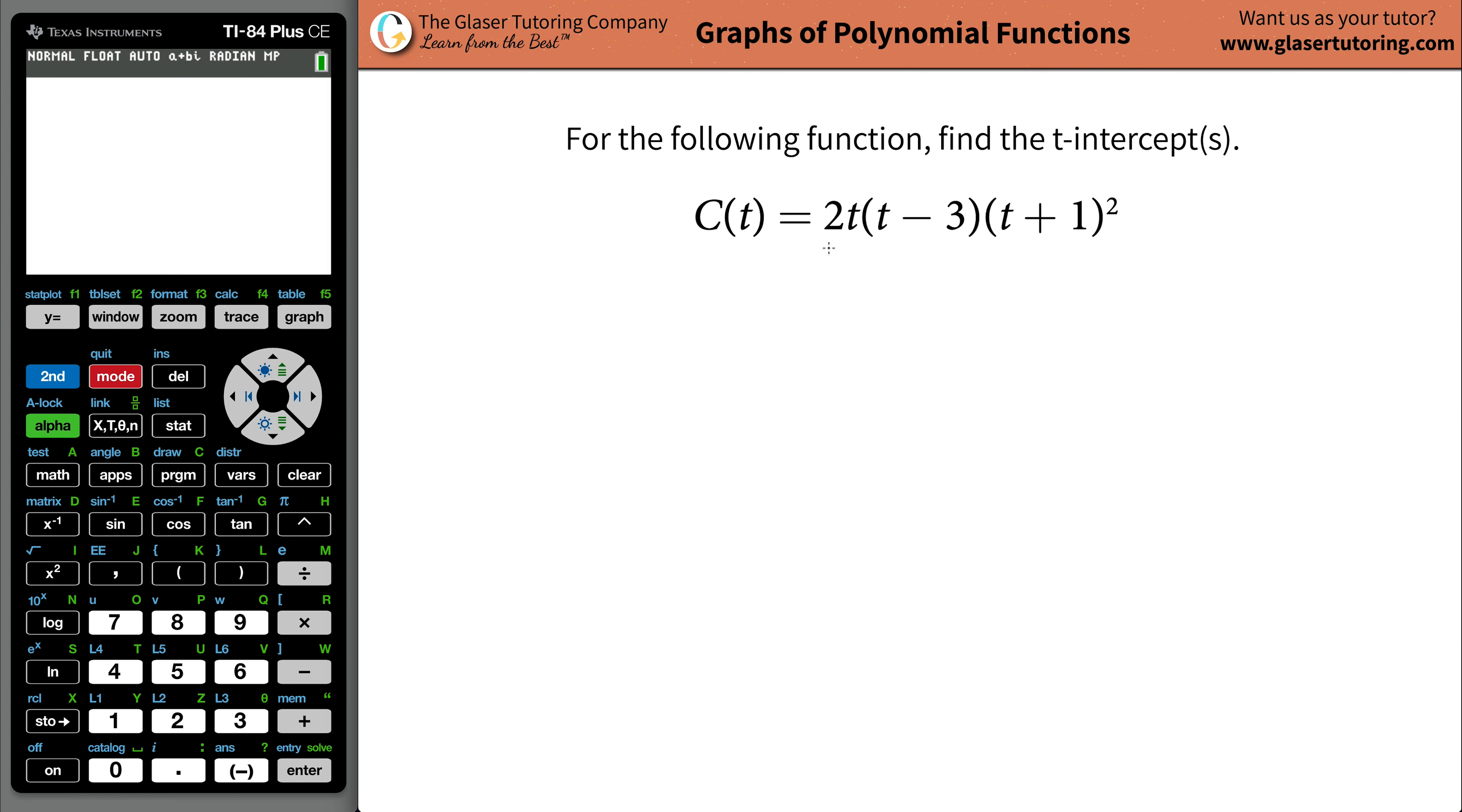C of t will be equal to 2t multiplied by t minus 3 multiplied by t plus 1 squared.